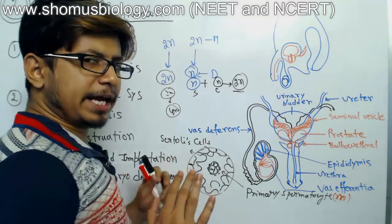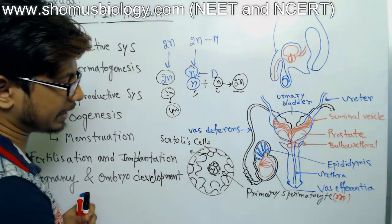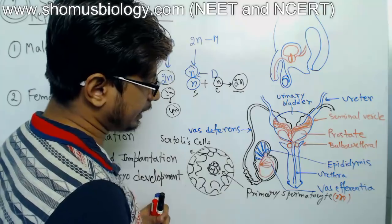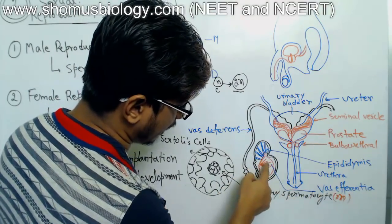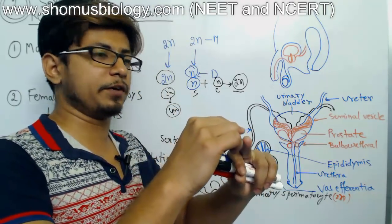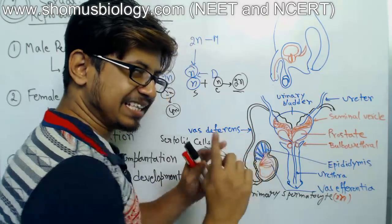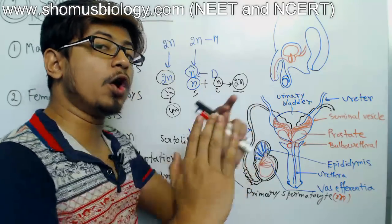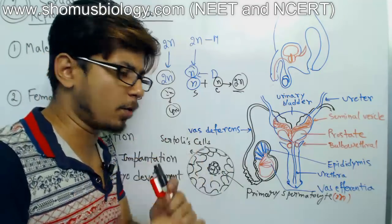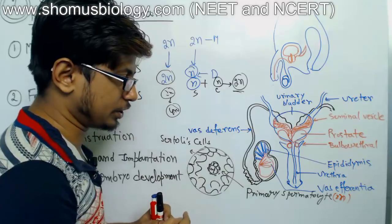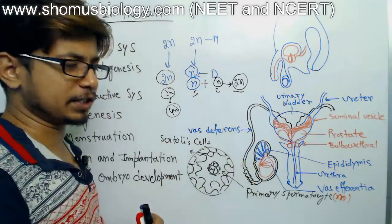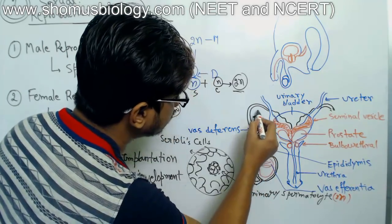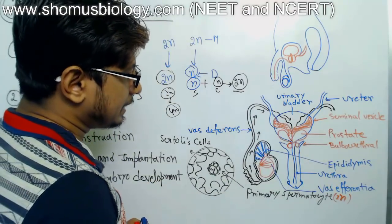Once sperm is produced in the seminiferous tubule, it is slowly transferred into the vas deferentia, then to the epididymis, and from there into the vas deferens — the longest tube. The sperm takes its journey through this tube, ultimately reaching the region near the urinary bladder. Both urine and sperm share the same exit pathway, though sperm and urine are released at different times.